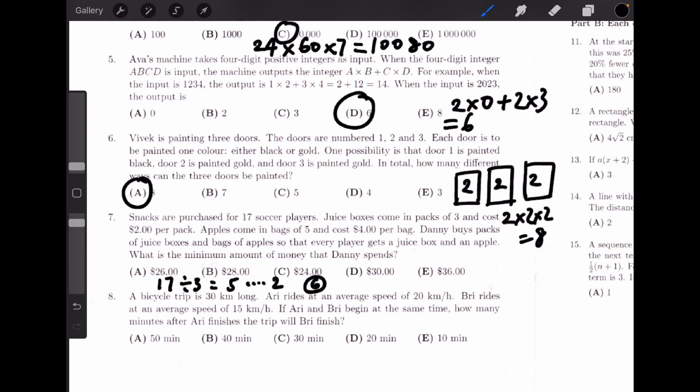For the apples, 17 divided by 5 gives us 3 with a remainder of 2. Therefore, the number of apple packs purchased should be 3 plus 1 equals 4. So the total amount of money needed should be 6 times 2 plus 4 times 4. This gives us 12 plus 16, which equals 28.